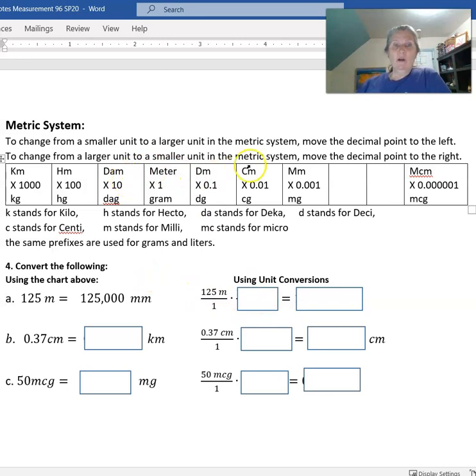I can then cross-cancel that, and you can see it'd be 125 times 1,000, and I would get the same using unit conversions. So you can use unit conversions or you can use this what I call the sidewalk chart.